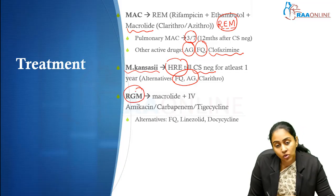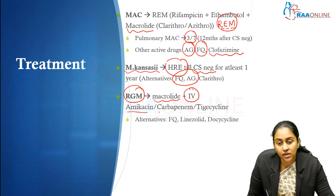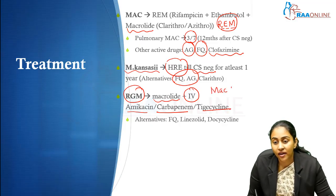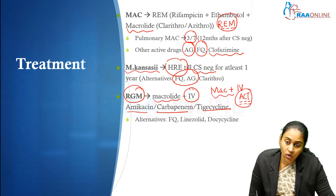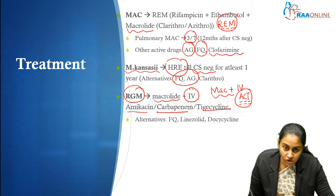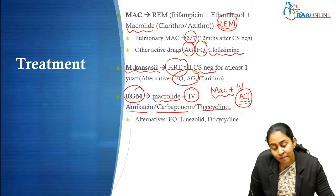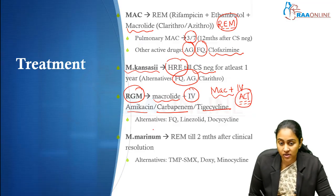What about rapid growers? Rapid growers are generally treated with a macrolide and with an IV medication. This parenteral drug could be amikacin, carbapenem, or tigecycline — remember IV ACT: A for aminoglycoside, C for carbapenem, T for tigecycline. Any one of these parenteral drugs along with a macrolide is what you use to manage rapid-growing mycobacterial infections, which includes M. abscessus, M. fortuitum, and M. chelonae. Alternatives include fluoroquinolone, linezolid, and doxycycline.